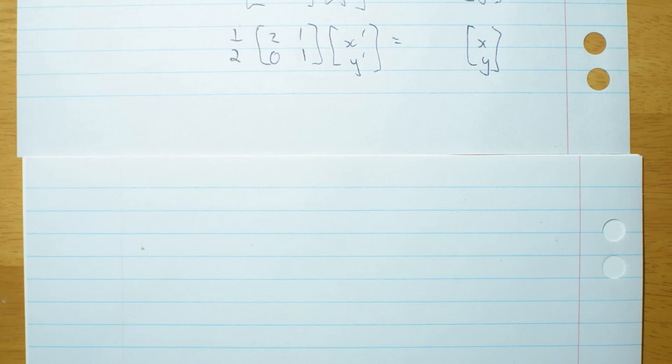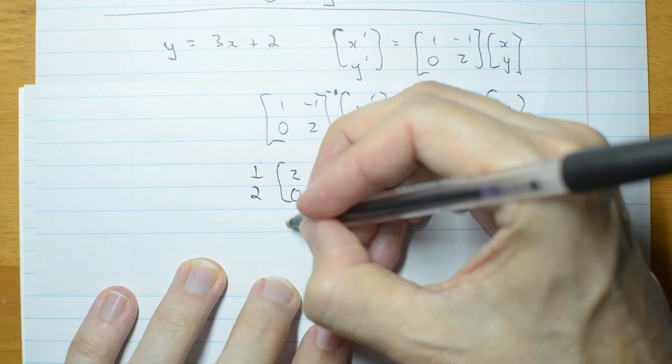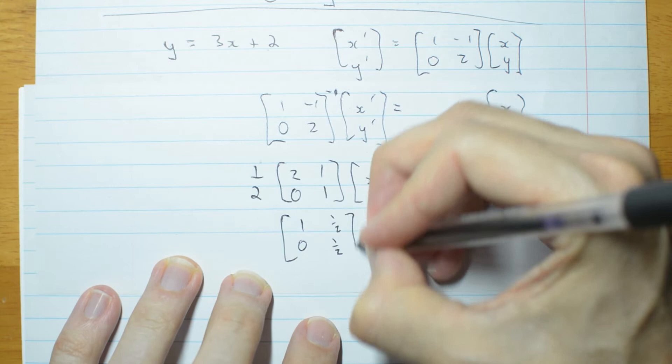So now I can take this and read off my equations. Actually I might do one more simplification first. I'm going to write it as 1, a half, 0, a half,